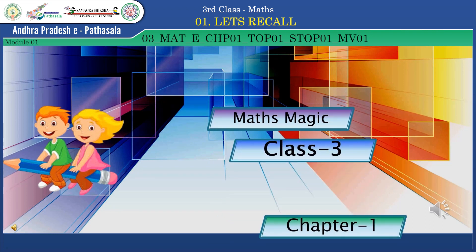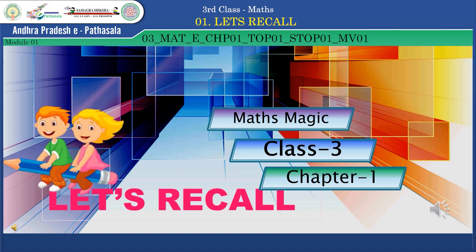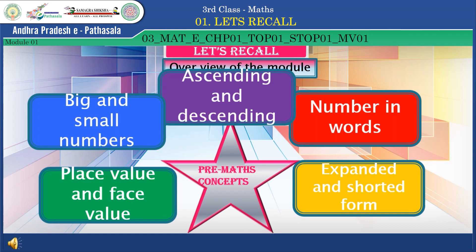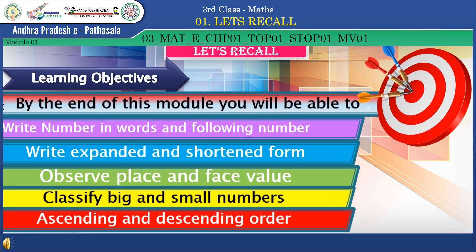Mathemagic Class 3, Chapter 1 — the topic is 'Let's Recall.' Overview of the lesson: recall pre-math concepts — numbers in words, expanded and shortened form, place value and face value, big and small numbers, and ascending and descending order. Learning objectives: by the end of this module, you will be able to write numbers in words, write expanded and shortened form, observe place and face value, classify big and small numbers, and arrange in ascending and descending order.